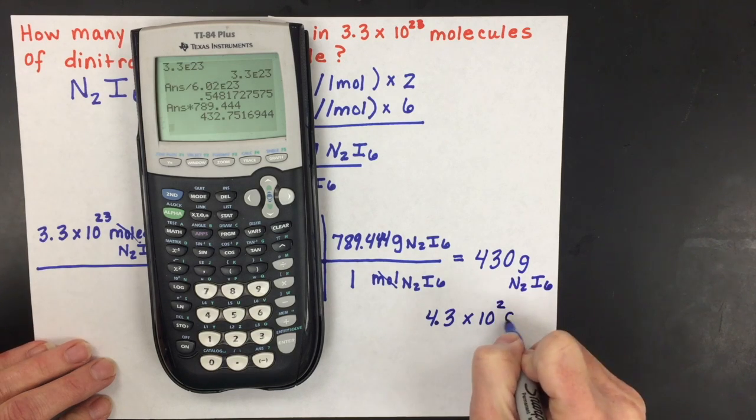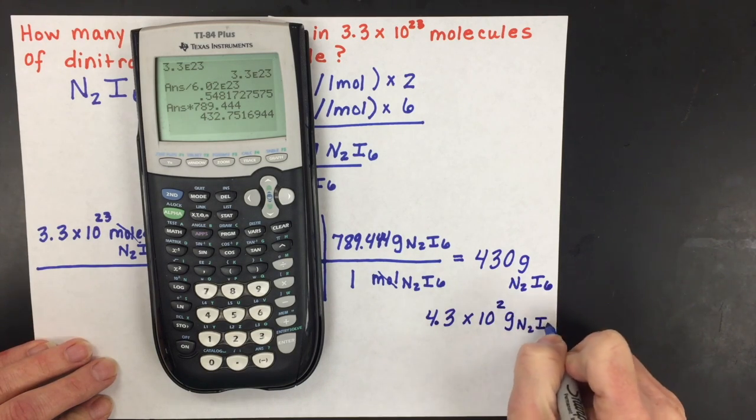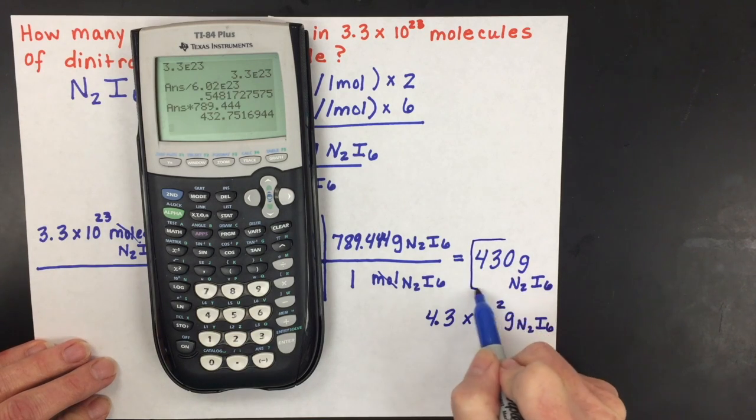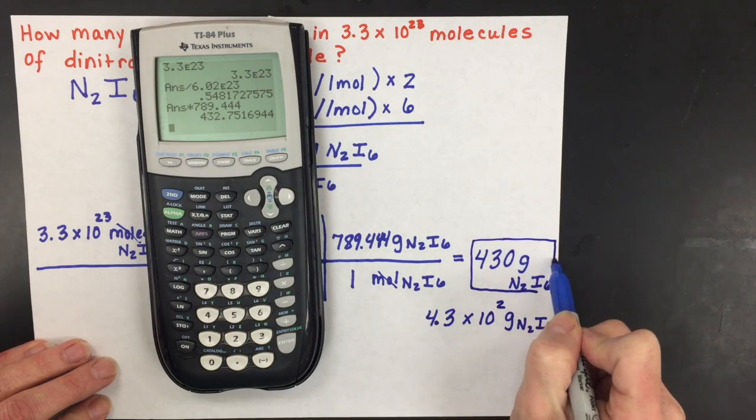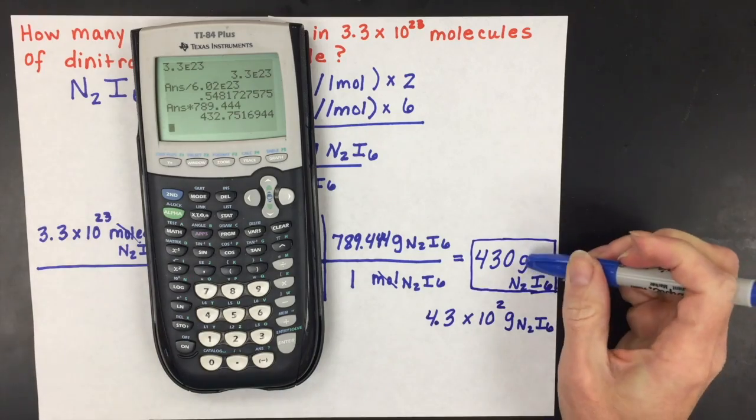And then put it to the 2, and again, grams of N2I6. And so there's your final answer with the right significant figures, the correct unit, and the correct label.